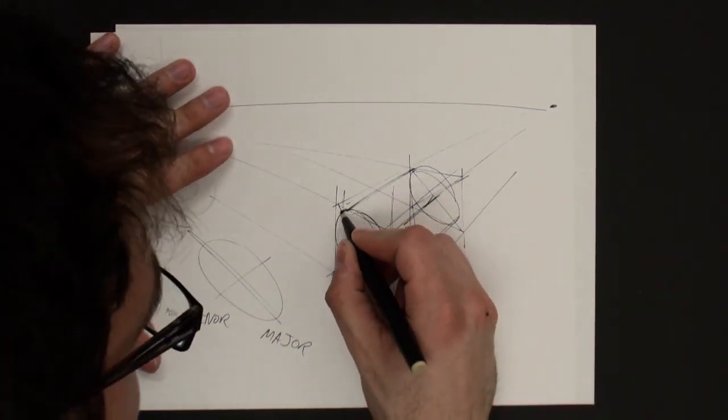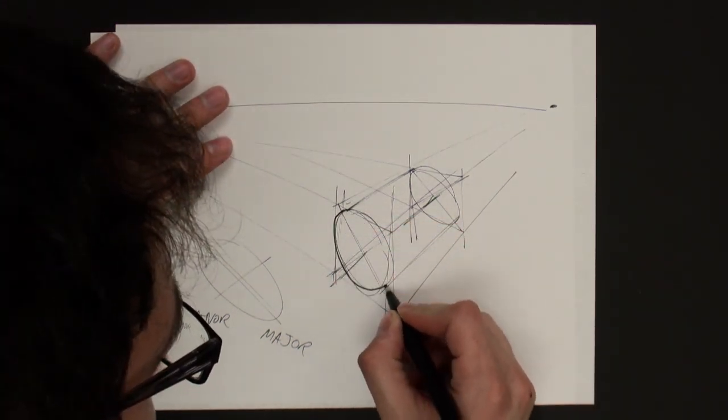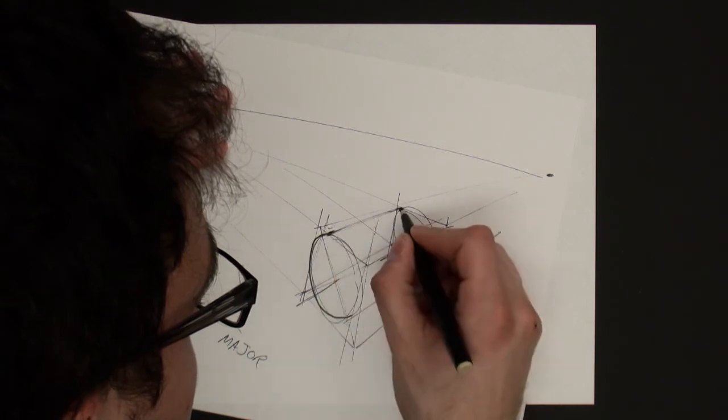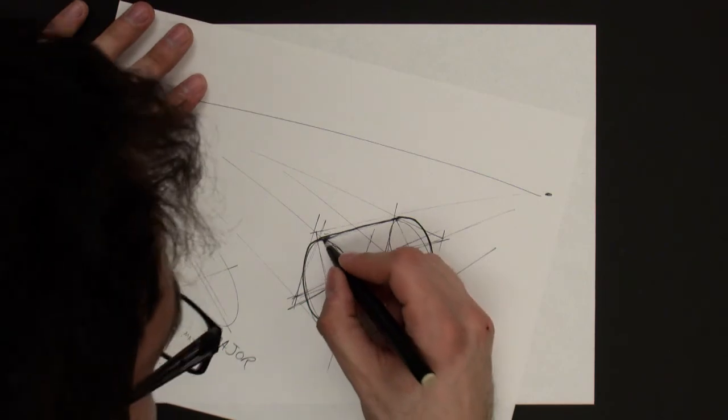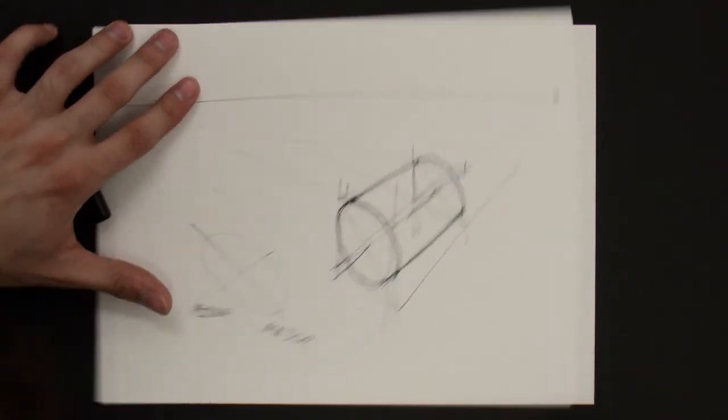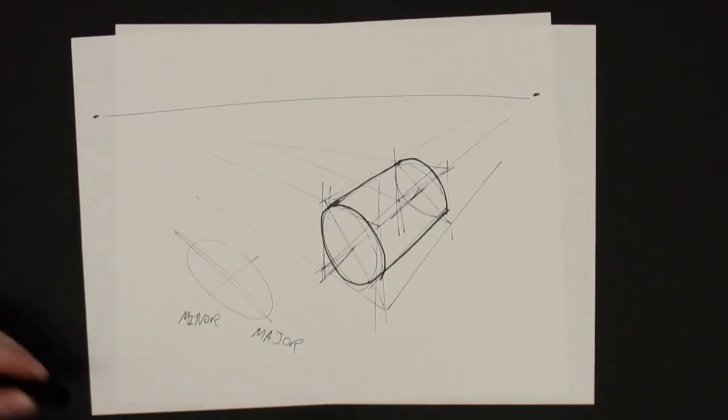We can also go ahead and darken that shape in. I'll darken the outer edge so it's a little easier to see. The cylinder in two-point perspective.